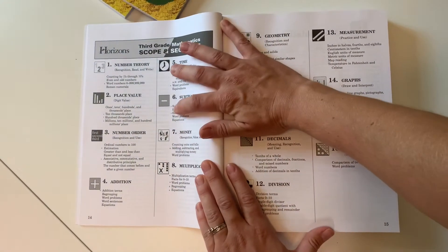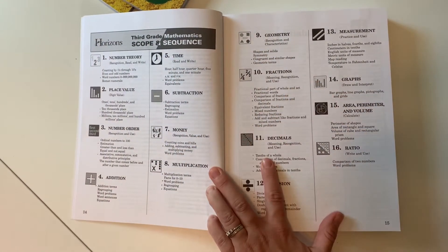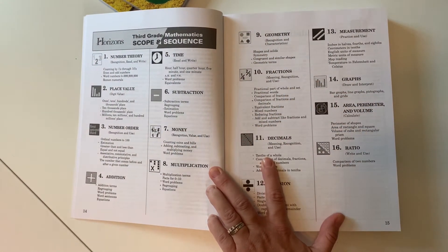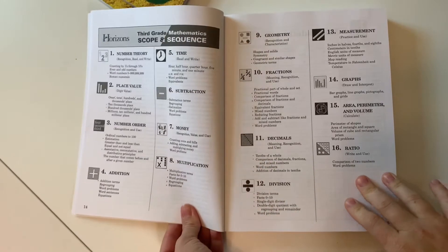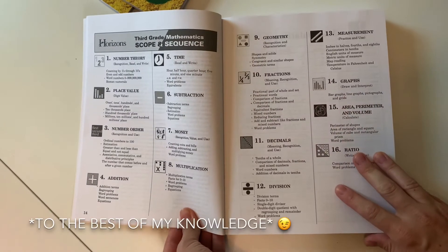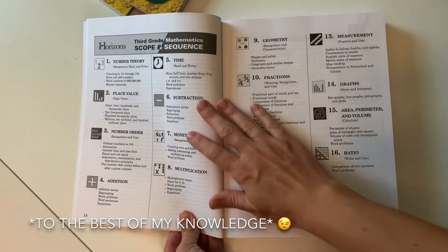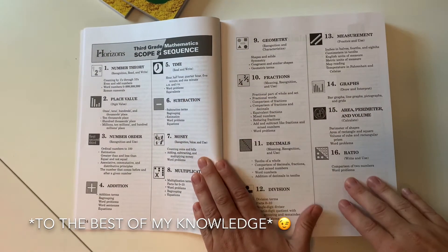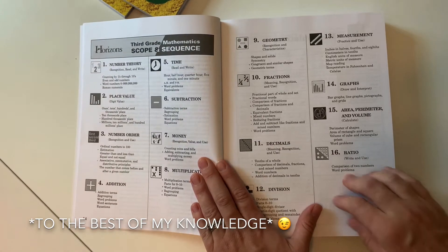And I actually went through this scope and sequence last night. And I don't know if you can see, but I put a little dot next to all of the sections that are new. So, for example, they were not covered in the second grade book.